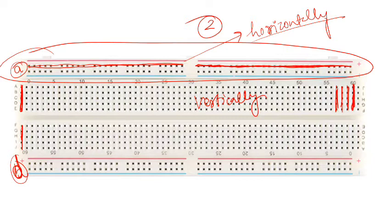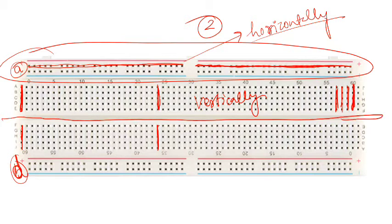There is no connection between the upper five holes and the lower five holes in the component rail — these two groups are separate because they are separated by a center line. This separation has its own purpose related to connecting ICs, which we will discuss at later stages. For now, simply keep in mind that holes in the component rail are connected vertically, and holes in the power rail are connected horizontally.